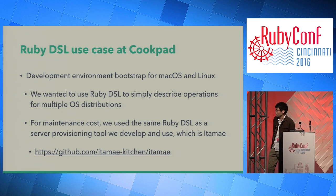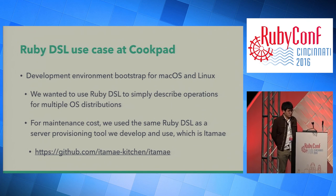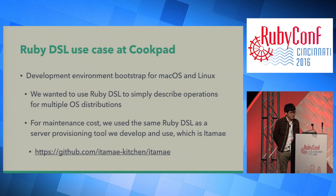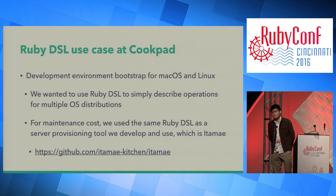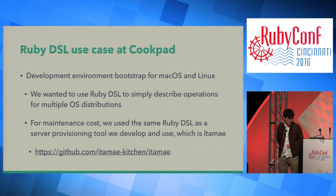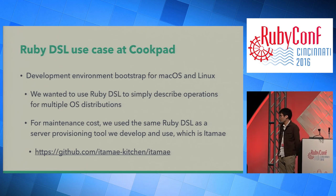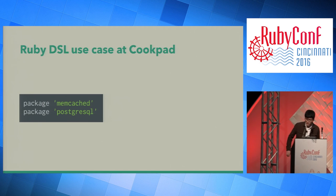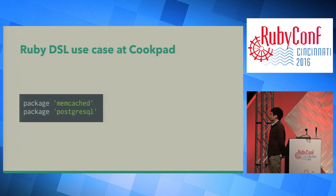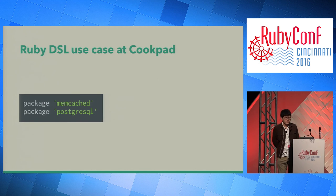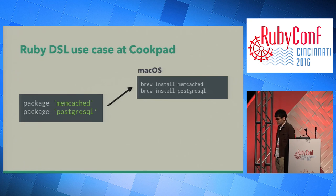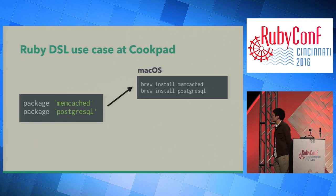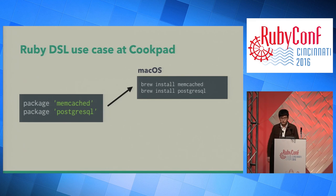For maintenance costs, we use the same Ruby DSL as a server provisioning tool we developed called Itamae — which means 'chef of sushi' — inspired by Chef, the server provisioning tool. For example, this DSL describes installing memcached and PostgreSQL, and you can use the same DSL to install them on both macOS and Ubuntu with Itamae.